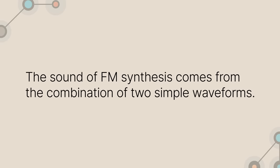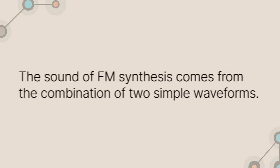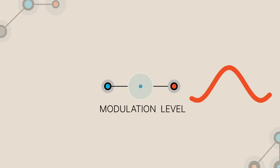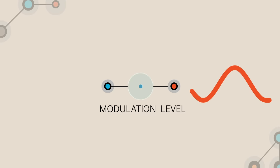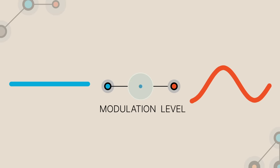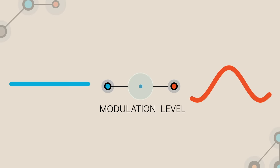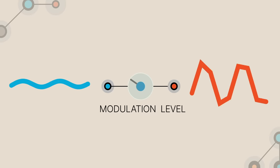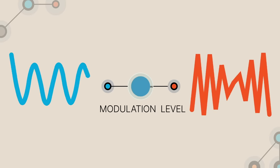The sound of FM synthesis comes from the combination of two simple waveforms. The first waveform is the one you hear and is often a pure sine wave. The second waveform you don't hear — instead, it feeds into the first one to shape the sound in various ways from subtle to drastic. If you understand this basic idea that some waveforms will be tone generators that we can hear and others will be fed into those to modulate the sound, then you're as much of an FM synthesis guru as you need to be.